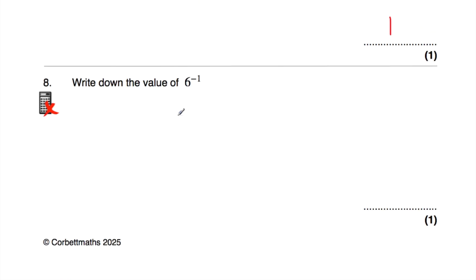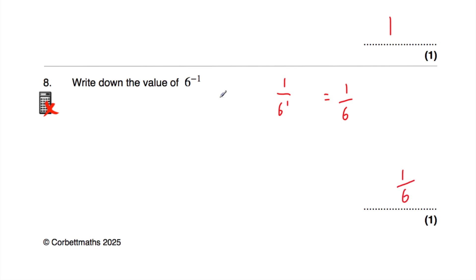Question 8: work out the value of 6 to the power of negative 1. It has a negative power, so we do 1 over the positive power — 1 over 6 to the power of 1, which is just 6. So the answer is 1 sixth. If you've got something to the power of negative 1, it simply means find the reciprocal of it.